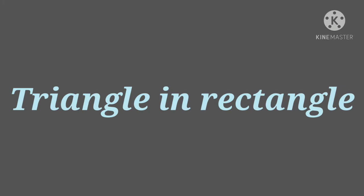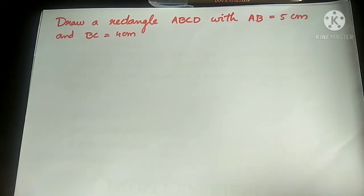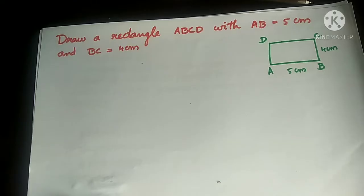The first topic is triangle in rectangle. The question is: draw a rectangle ABCD with AB equal to 5 cm and BC equal to 4 cm. Before drawing this figure, let us draw a rough figure of it.